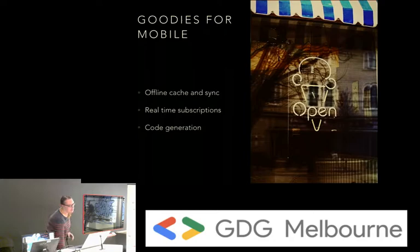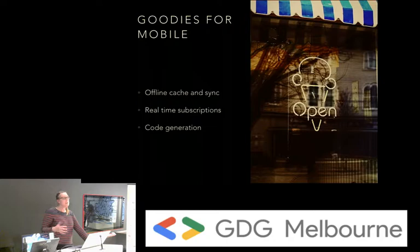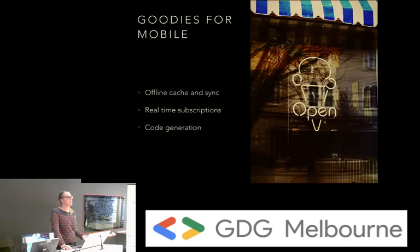AppSync also has a lot of goodies for mobile development. For free, you get offline caching and syncing — if you've ever tried to implement that yourself, it's a huge headache, so having a first version for free is amazing. It also offers real-time subscriptions, where you can stay connected over a WebSocket and receive data rather than polling for it. A lot of the examples used are chat programs, where clients stay connected and get messages in real time.